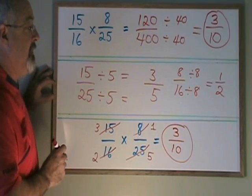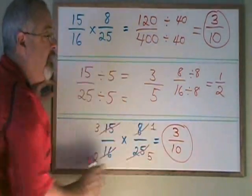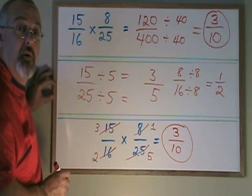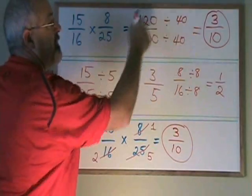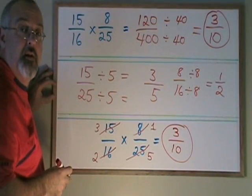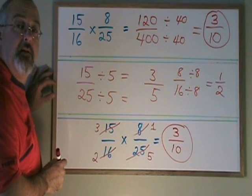The good thing about cancelling is that if you can do it successfully, you end up with an answer that is already reduced to lowest terms. If you multiply without cancelling, you have this extra step of reducing the fraction before you have given your final answer. This is how cancelling works.